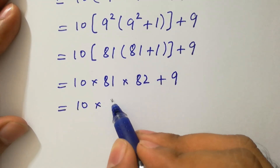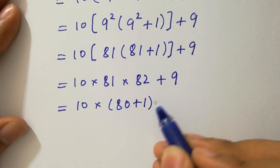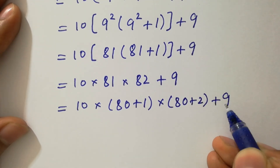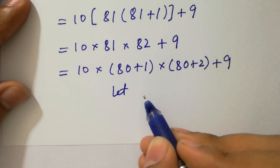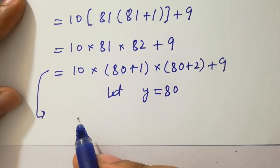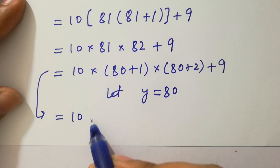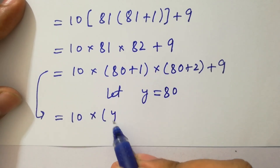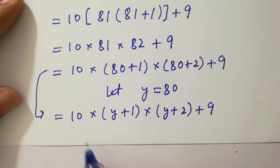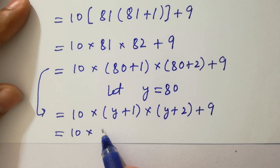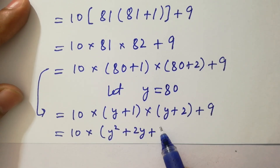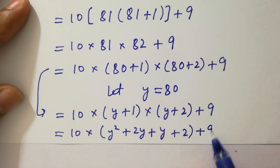Here, 81 is the same as 80 plus 1, and 82 is the same as 80 plus 2, plus 9 as it is. Let's suppose that y equals 80. Then it will be 10 times (y plus 1) times (y plus 2) plus 9 as it is. Expanding, we have 10 times (y squared plus 2y plus y plus 2) plus 9.